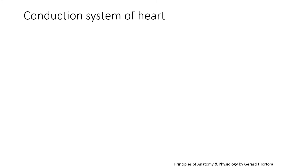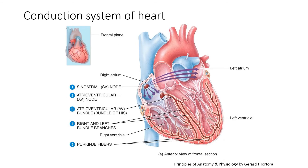Now let's see the conduction system of the heart. The conduction system consists of five different components: SA node, AV node, AV bundle, bundle branches, and Purkinje fibers.